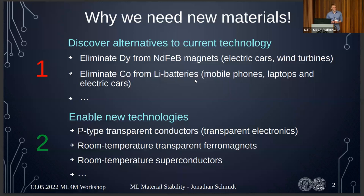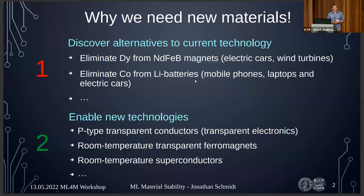I'll start with a small introduction on why we care about this problem. First, we really need to discover alternatives to current technology. For example, neodymium iron boron magnets used in electric cars require extra dysprosium, whose production is quite limited. For cobalt, demand is projected to increase 50-fold in the next decade due to lithium batteries and electric cars, and cobalt is produced in the Democratic Republic of Congo, raising human rights issues.